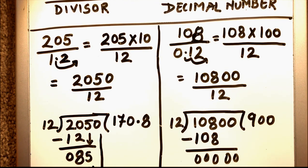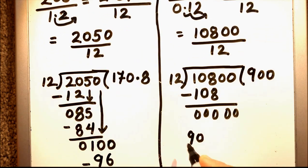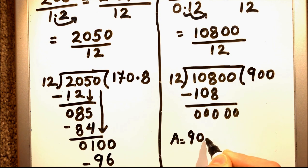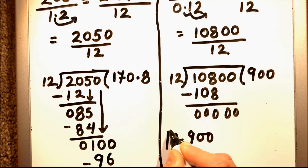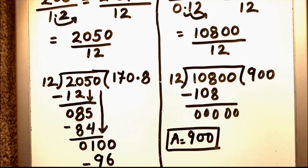So our final answer will be 900. In this way we can divide two numbers with a decimal divisor. Thanks for watching.